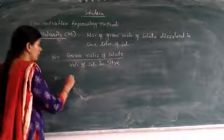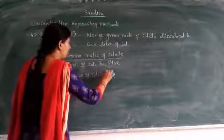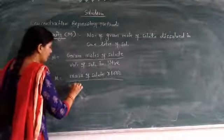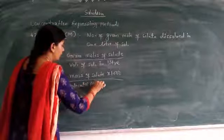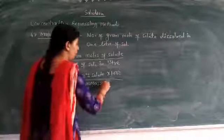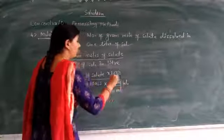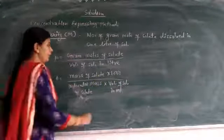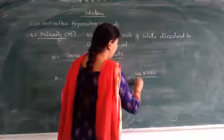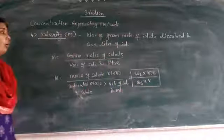So molarity equals to gram moles of solute upon volume of solution in liters. If the volume is given in milliliters, then it is mass of solute into thousand upon molecular mass into volume of solution in milliliter. It is called molarity.